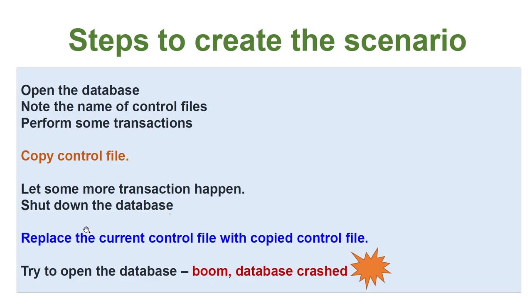If you want to recreate this scenario in your home lab, here are the steps: open the database and note the name of the control file, since we are going to work with it. Perform some transactions, then copy the control file while the database is open. Perform some more transactions, then shut down the database and replace the current control file with the copied one — bringing the control file to the older version while your data files remain at the newer version.